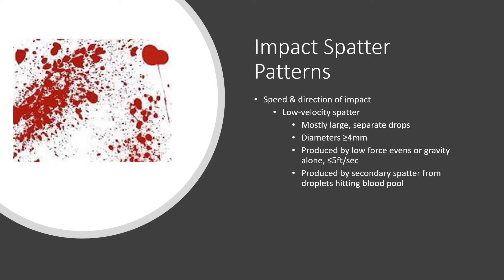Low velocity spatter takes on mostly large and separate drops of roughly greater than four millimeters. They're produced by low force events or gravity alone from a relatively low height. They'll produce secondary spatter only from droplets hitting a pool of blood — they won't really produce satellite droplets by themselves. If you cut yourself and hold your wound over a table just an inch or two high, the blood just drops. The higher up you go, the more likely you are to see those individual satellite droplets form.